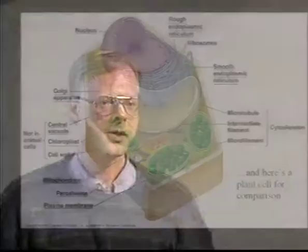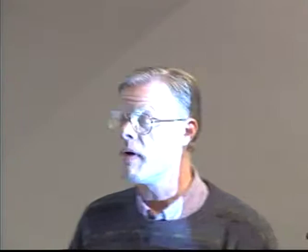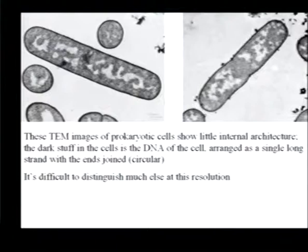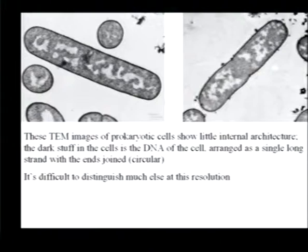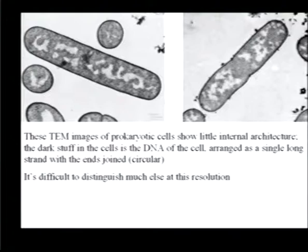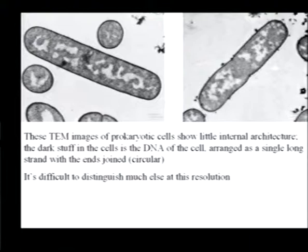Here's a transmission electron microscope image of prokaryotic cells. That dark material is DNA and cytoplasm. The DNA molecule is circular — the ends are wrapped back on themselves and bound by covalent bonds. That's another distinction: prokaryotes have circular DNA; eukaryotes have linear DNA. The dark band around the cell is the cell wall. Very little else can be distinguished at this resolution.